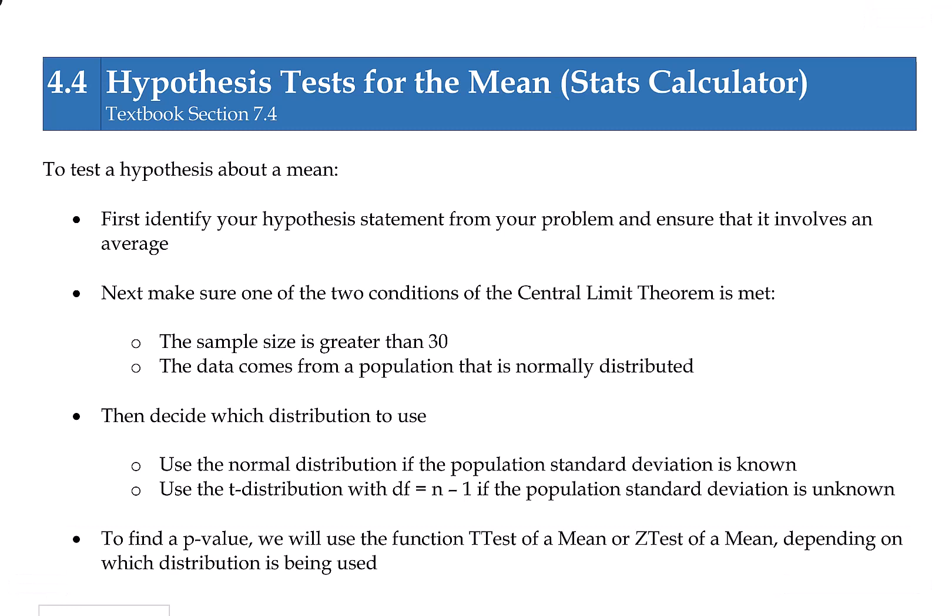Once we have created our hypothesis and need to calculate a p-value, we're going to use technology to do that. There are two functions in your online stats calculator that can calculate p-values. One is called t-test of a mean and the other is z-test of a mean — the t indicating the t-distribution, and the z indicating the normal distribution is being used.